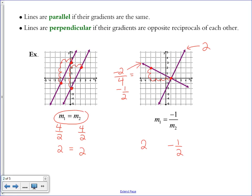One is positive and one is negative. One is 2 over 1, and the other is 1 over 2 — it's the reciprocal, or flipped upside down, version of the first slope. So when you have two slopes that are opposite reciprocals of each other, you can prove that the two lines are perpendicular.